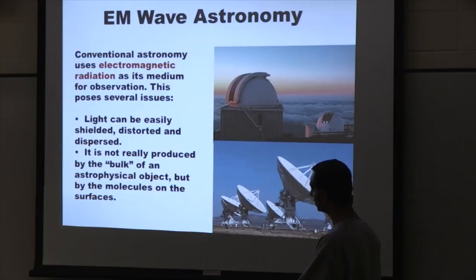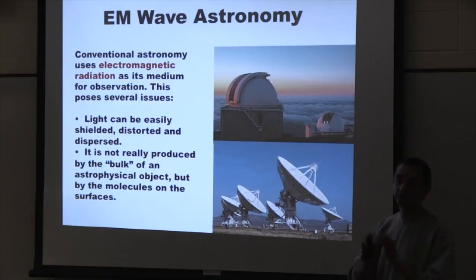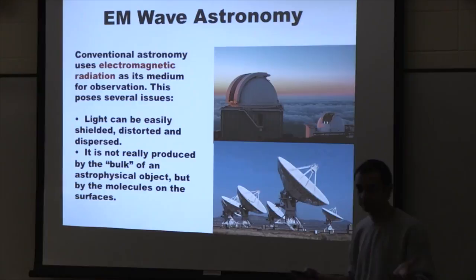The second challenge is that light is not quite produced by the bulk of an astrophysical object — it's produced by the molecules on the surface. So there's lots of information about the outside of an object, but often no direct information about the core. For example, it's very difficult to infer a star's mass or spin from light alone.